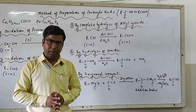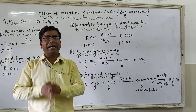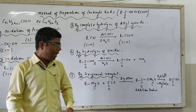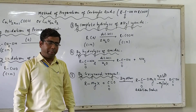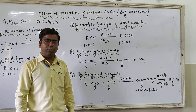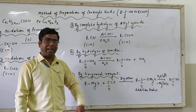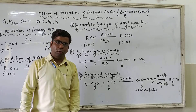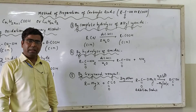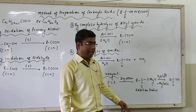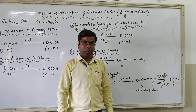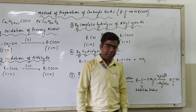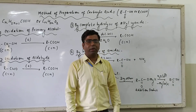The last method is from Grignard reagent — a type of addition reaction where we add carbon dioxide to the Grignard reagent. The Grignard reagent is RMgX (alkyl magnesium halide), and carbon dioxide is CO₂. The reaction takes place in the presence of dry ether. The CO₂ molecules get inserted in between R and Mg, giving an addition product R–C(=O)–O–MgX. On hydrolysis, this addition product gets converted to RCOOH with the release of Mg(OH)X (hydroxy magnesium halide).